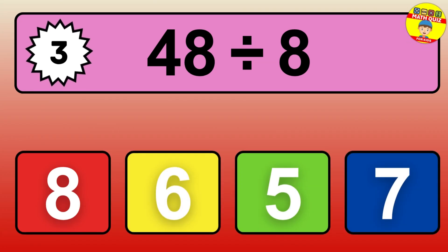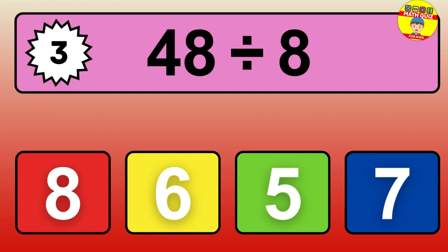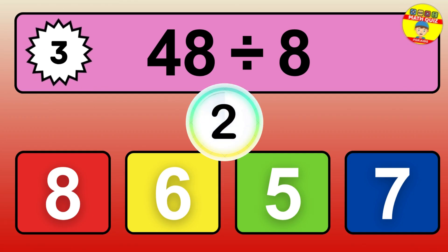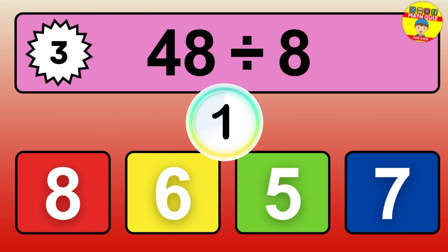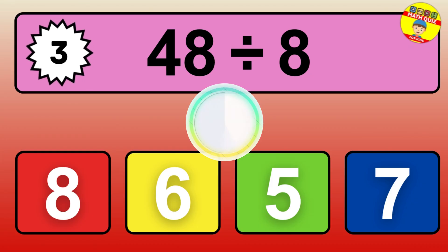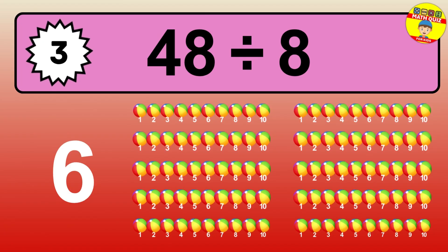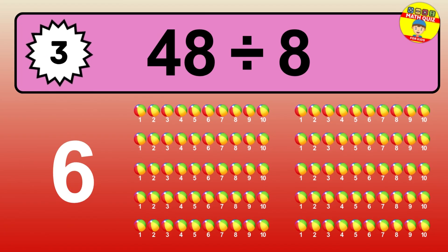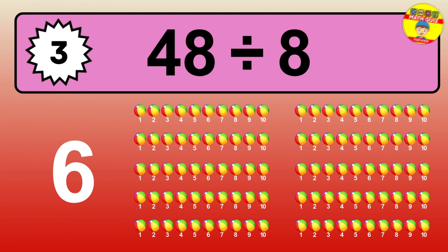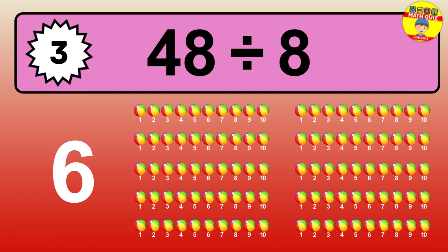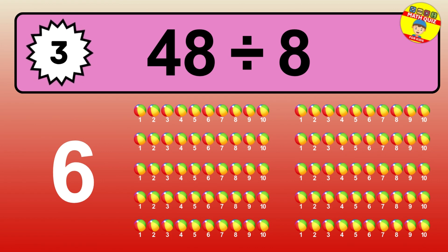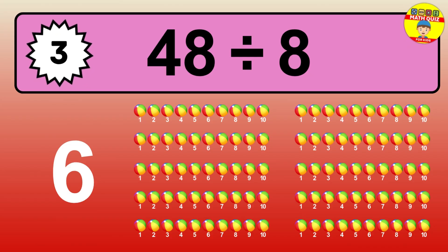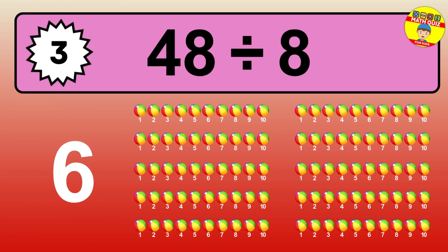What is 50 divided by 5? Picture this: you have 50 objects to divide into groups of 5. How many groups can you make? Let's think about it. Ready to find out? Let's break it down. Imagine you have 50 objects — can you picture them lined up? Now think about splitting them equally into smaller groups of 5.